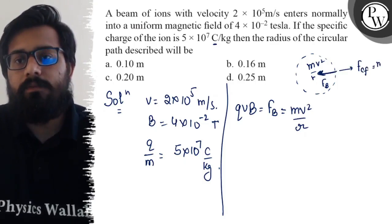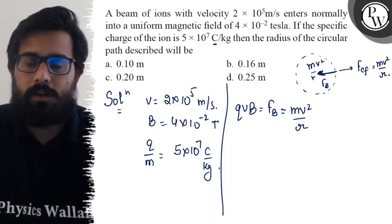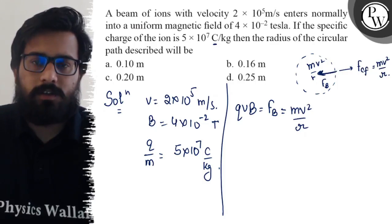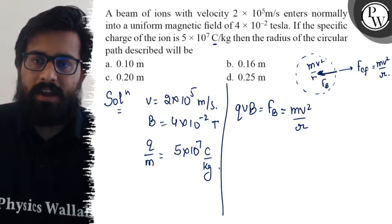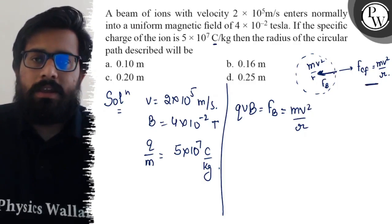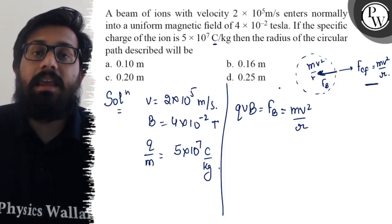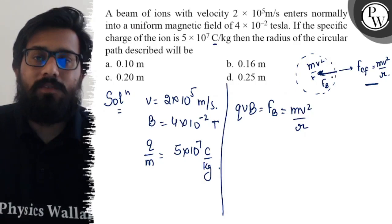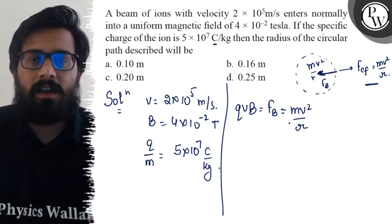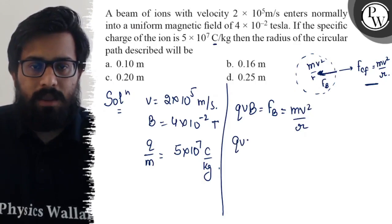Or you can say that this magnetic force balances the centrifugal force, which is again mv²/r. Both options are absolutely correct. You can say that magnetic force balances the centrifugal force, or you can say that magnetic force will behave like a centripetal force.